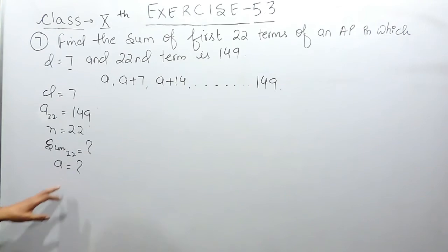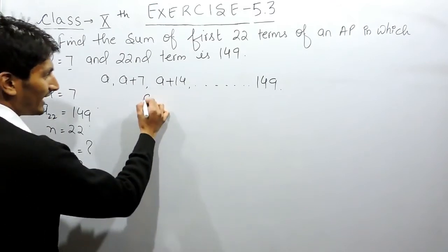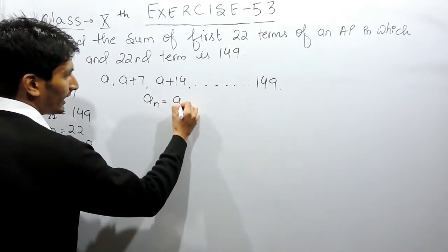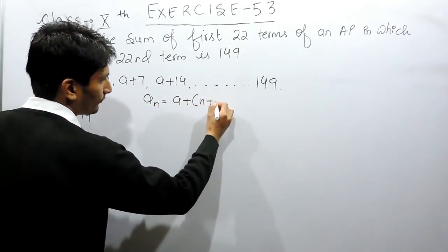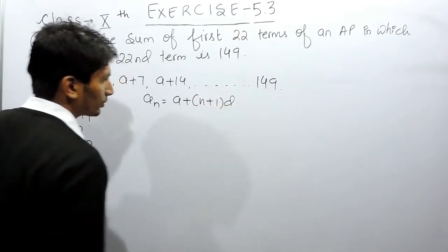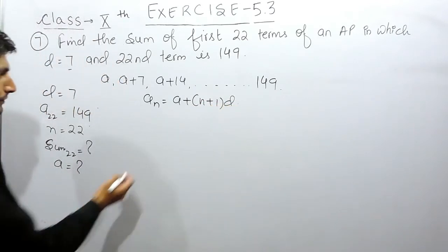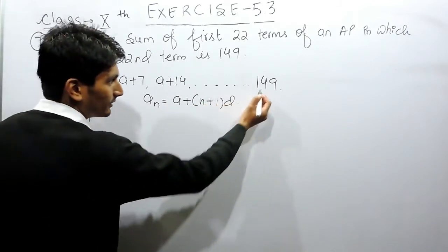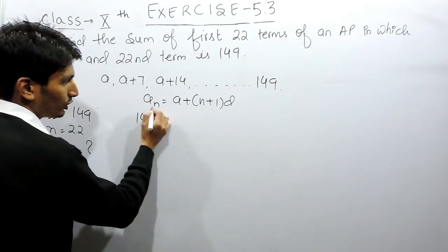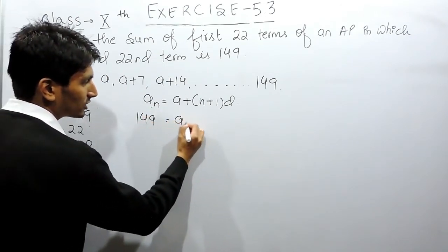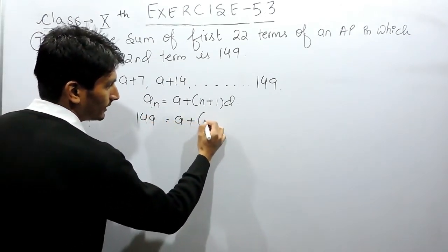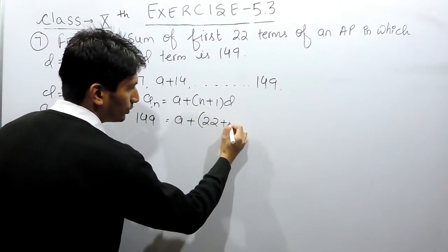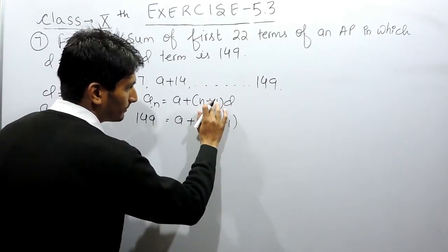To find the sum of 22 terms, we must know the first term, so we have to calculate the first term of this AP. Now the 22nd term is given, and this is the formula we are going to use: a_22 = a + (n-1)d. This is the 22nd term, given as 149, where the first term is not known but n = 22.